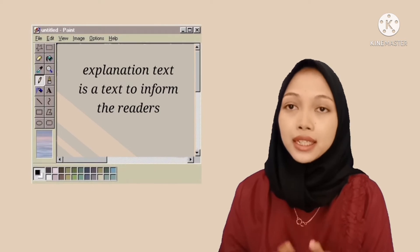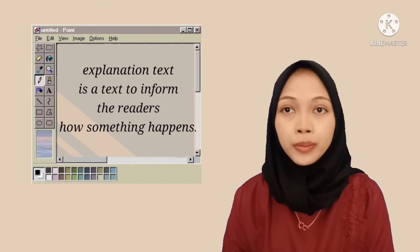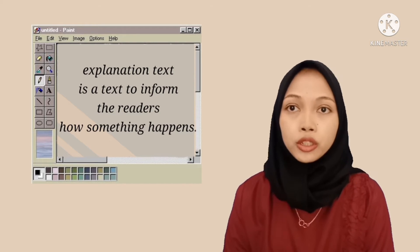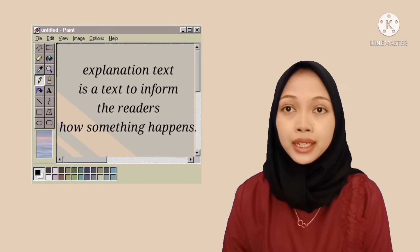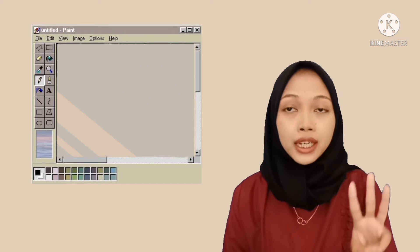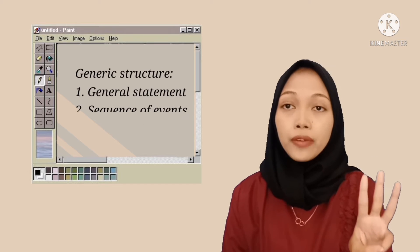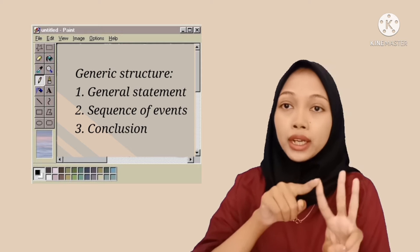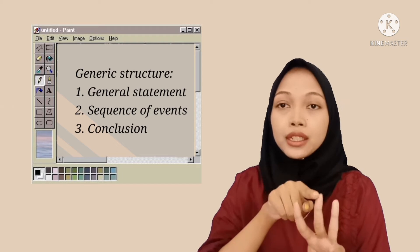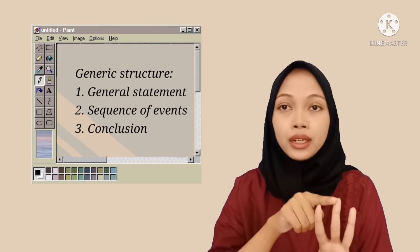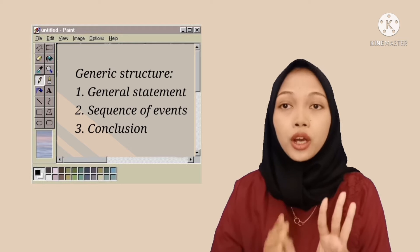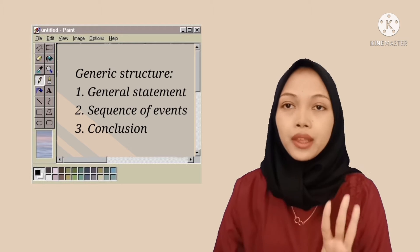Explanation text is a text to inform the reader about how things occur or how some things happen. There are three generic structures of explanation text. The first one is general statement, and then sequence of events, and the last one is conclusion or closing.